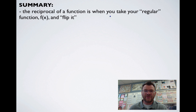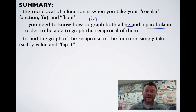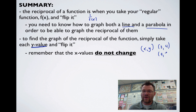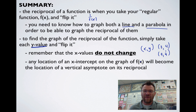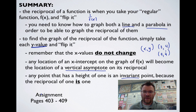In summary: the reciprocal of a function takes f(x) and flips it to become 1 over f(x). You need to know how to graph both lines and parabolas to graph their reciprocals. To find the graph of the reciprocal, simply take each y-value and flip it — the x-values do not change. So if a point was (3, 4), the reciprocal point is (3, 1/4). Any x-intercept of f(x) becomes a vertical asymptote of its reciprocal. Any point with a height of 1 or -1 is an invariant point. Your assignment is on pages 403 to 409.